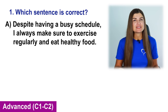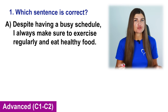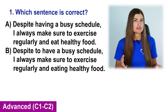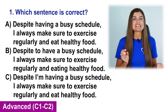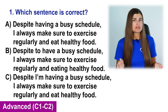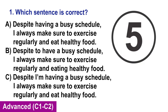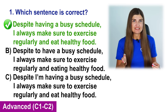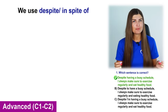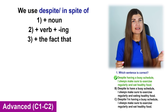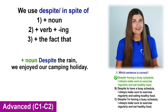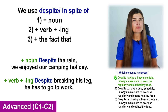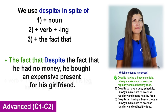Which sentence is correct? A. Despite having a busy schedule, I always make sure to exercise regularly and eat healthy food. B. Despite to have a busy schedule, I always make sure to exercise regularly and eating healthy food. C. Despite having a busy schedule, I always make sure to exercise regularly and eat healthy food. The correct sentence is A: Despite having a busy schedule. We use despite or in spite of plus a noun, or plus a verb plus -ing, or plus the fact that. For example: despite the rain, we enjoyed our camping holiday. Despite breaking his leg, he has to go to work. Despite the fact that he had no money, he bought an expensive present for his girlfriend.